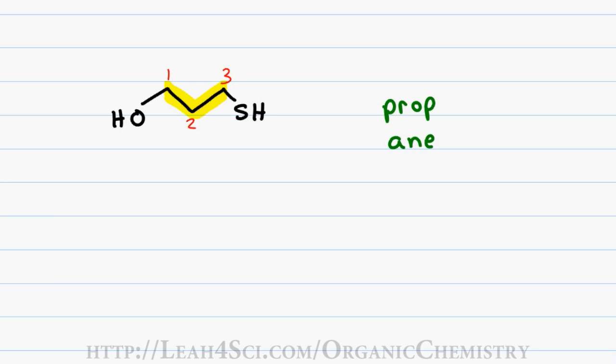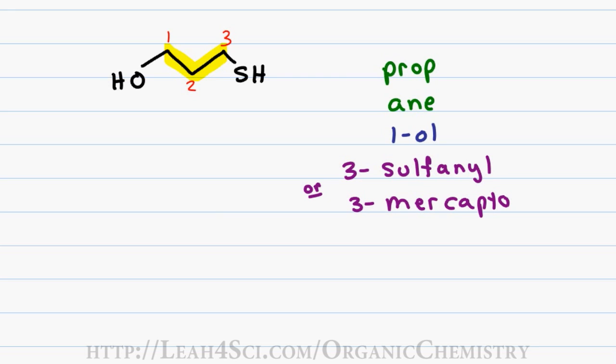Since alcohol is my functional group I get 1-ol and sulfur being my substituent my prefix can be 3-sulfonyl or 3-mercapto. I've seen both used so determine which one your professor asks for. Putting both versions of the name together I get as follows. For the sulfonyl substituent I get 3-sulfonyl-1-propanol. When using mercapto I get 3-mercapto-1-propanol.